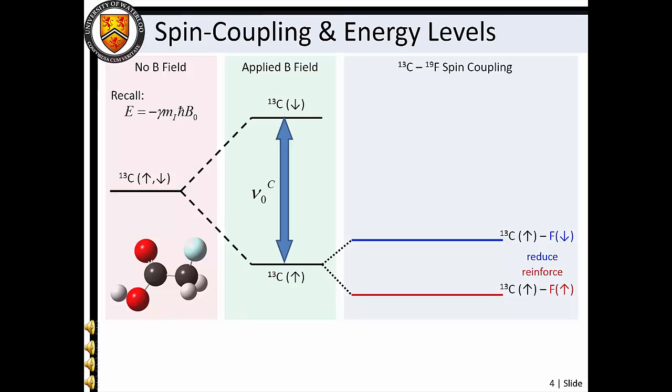If, on the other hand, the adjacent nuclear spin reduces the applied field, the original spin-up state is slightly destabilized. For the original carbon-13 spin-down state, the exact opposite is true. An adjacent fluorine spin-up nucleus raises the carbon-13 spin-down state energy, whereas an adjacent spin-down fluorine nucleus lowers this spin state's energy.